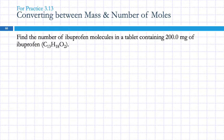So find the number of ibuprofen molecules in a tablet containing 200 milligrams of ibuprofen. And the formula is C13H18O2. So this is a dimensional analysis problem. So we need to look at what's given. There's only one number in there, right? 200 milligrams. And what do they want us to find? Number of molecules. So that's what we're trying to do. And it's just all the units.